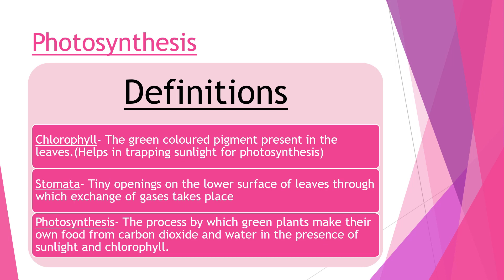Before we learn about photosynthesis, let us learn about chlorophyll and stomata. Chlorophyll is a green color pigment present in the leaves and it helps in trapping the sunlight for photosynthesis - this is why leaves are green in color. If there is no chlorophyll, the leaves will not be green, and even if plants are kept in sunlight, they will not be able to absorb sunlight and carry out photosynthesis. Stomata are the tiny pores on the lower surface of the leaf through which exchange of gases takes place. In aquatic plants, stomata can also be present on the upper surface.